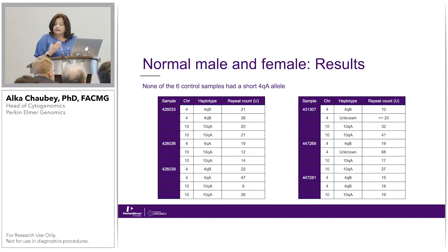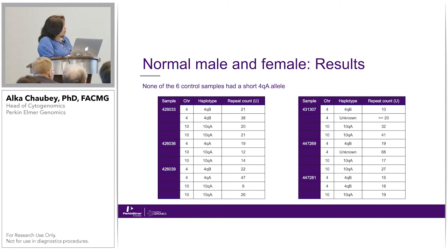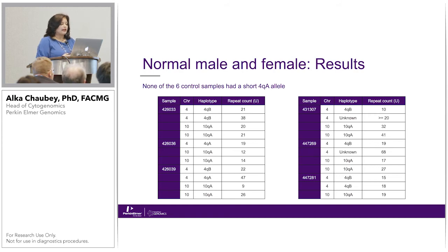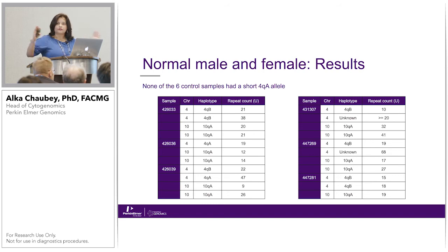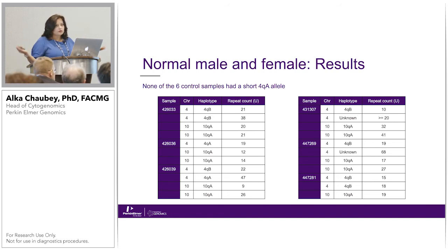Next, we looked at what was happening with our normal male and female samples. All samples showed the normal profile, and none of the control samples had the short 4QA allele. All of them had the long molecules, which is exactly what we were expecting.